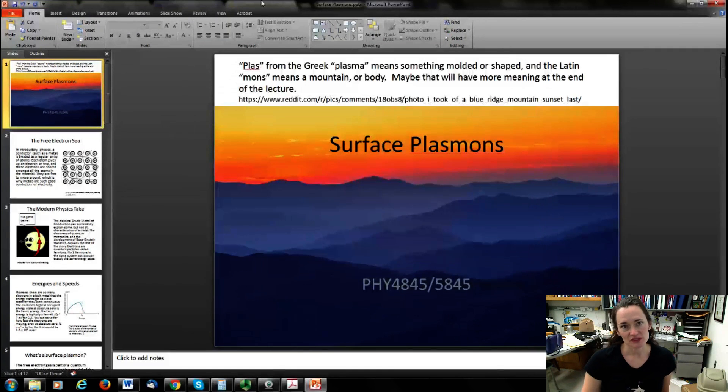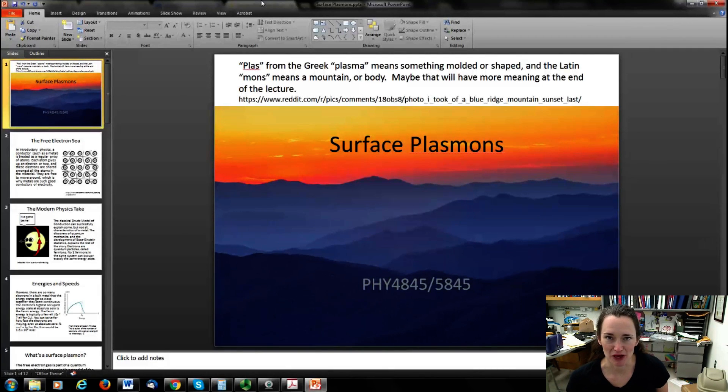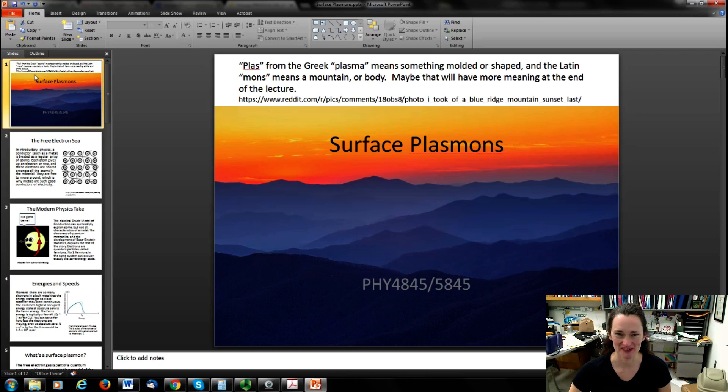Hi. So today I want to talk to you about surface plasmons. And the word plasmon comes from the Greek word plasma, which means molded or shaped. You might think of the word plastic. And the Latin word mons, which means a mountain or body. And maybe by the end of this lecture, that name will have more meaning.